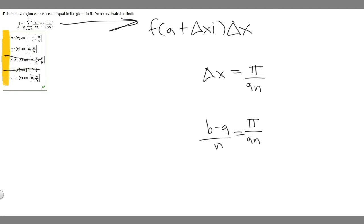What about this one? If we do pi over 9 minus 0 over n, it's going to give us pi over 9n. So that one will work.